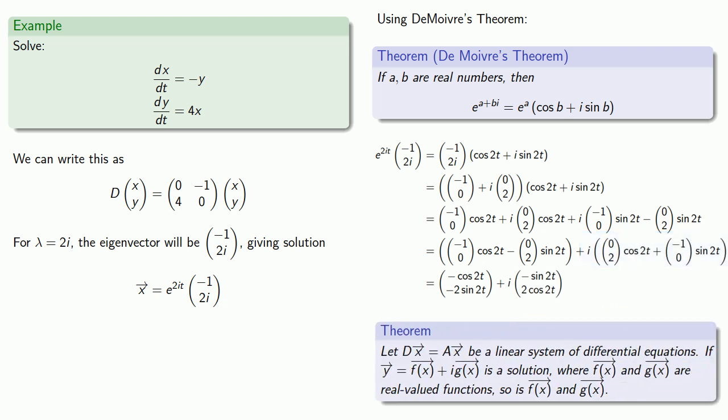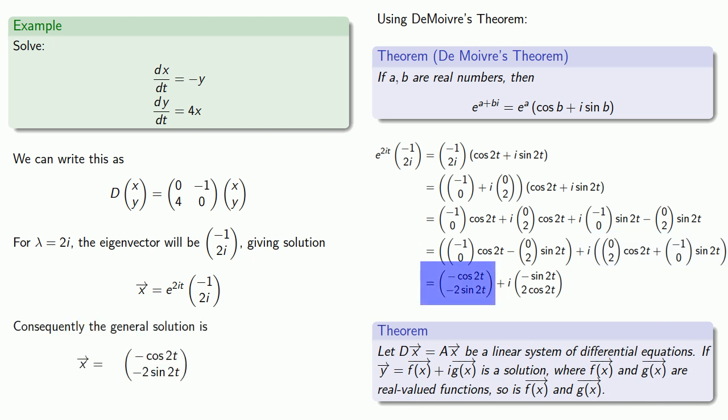And our theorem says that the real part forms a solution, our complex part forms a solution, and linearity guarantees that any linear combination of these two will also form a solution. And so we have the general solution.